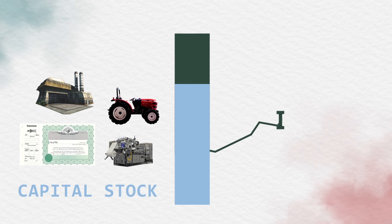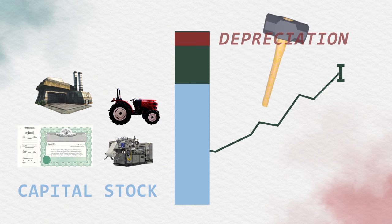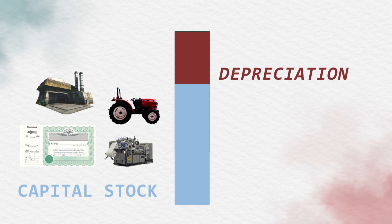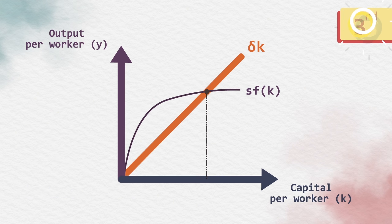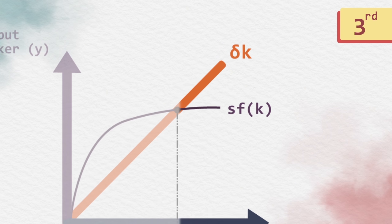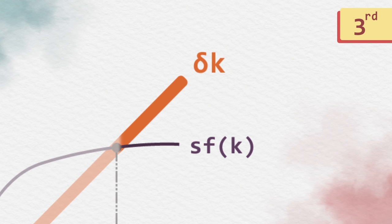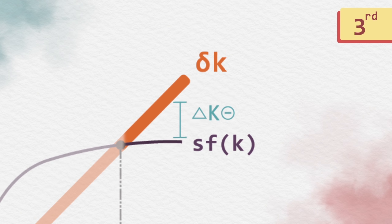Third case: we move to the right of the graph. It's clear to say that the investment is less than the depreciation, so in this case we get a negative change in capital per worker.